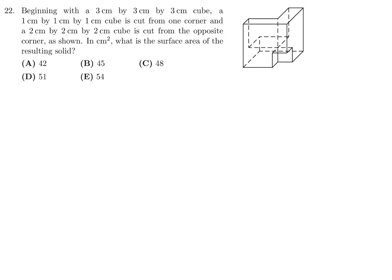Beginning with a 3 by 3 by 3 cube, a 1 by 1 by 1 cube is cut from one corner, and a 2 by 2 by 2 cube is cut from the opposite corner. As shown in centimeters cube, what is the surface area of the resulting solid? Well, we've got a little bit of a shortcut here, much needed.